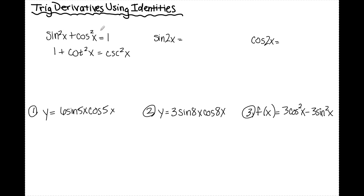Now I'm going to take my original Pythagorean identity and divide the entire thing by cosine squared x. Sine squared x divided by cosine squared x is tan squared x; cosine squared x divided by cosine squared x is 1; and 1 divided by cosine squared x is secant squared x. There are our three Pythagorean identities.